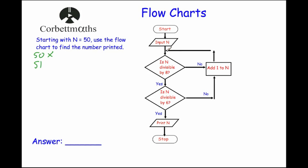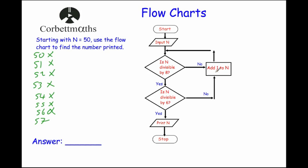We keep going around the loop until we get a number divisible by 8. At 56, yes it is divisible by 8. Now we check: is 56 divisible by 6? No it's not, so we go right, add 1 to get 57, and loop back around. We continue through 57, 58, 59, 60, 61, 62, 63 — none divisible by 8 — until we reach 64. Is 64 divisible by 8? Yes. Is 64 divisible by 6? No, so we add 1 again to get 65 and loop back.